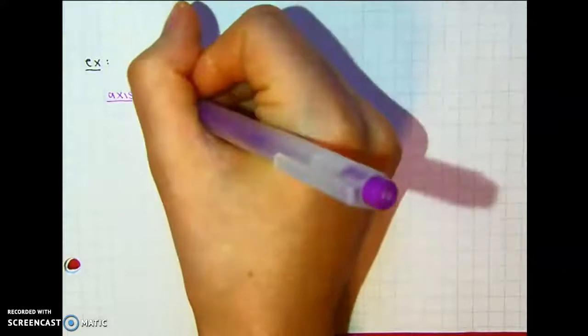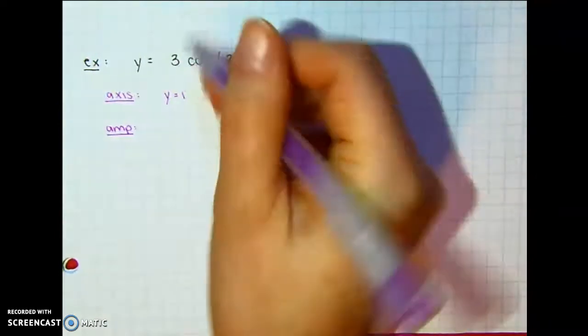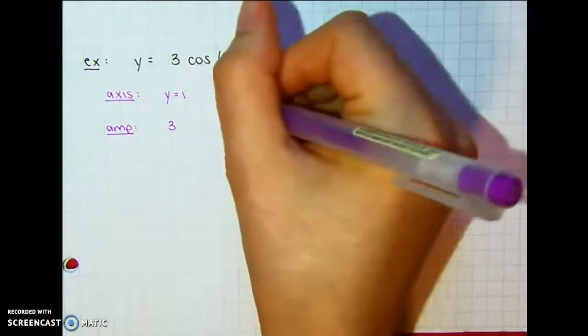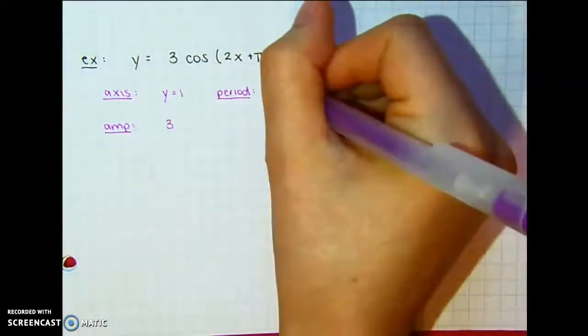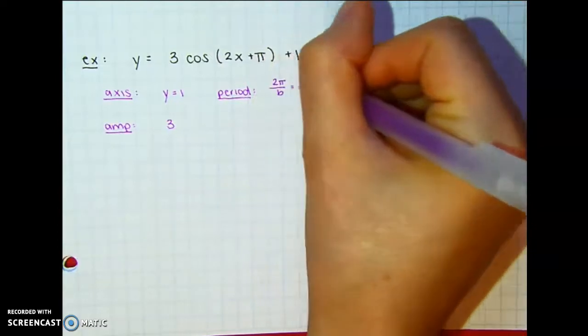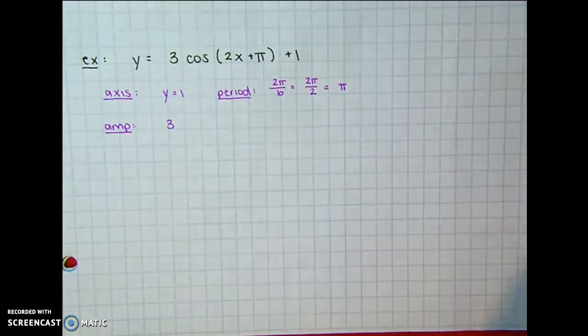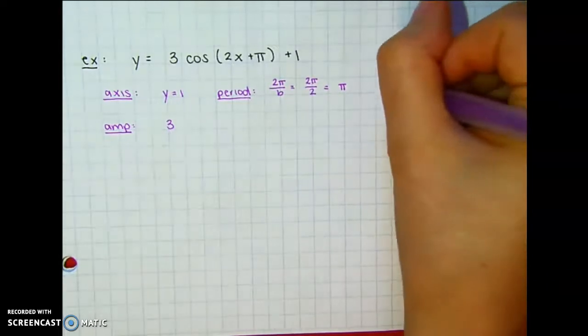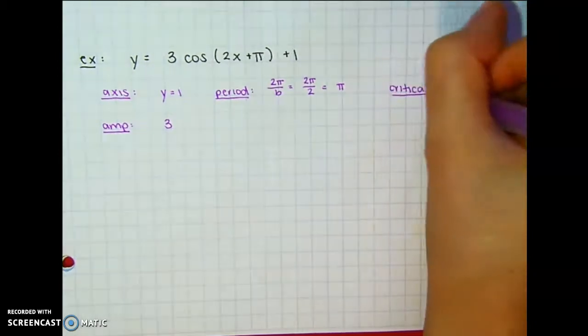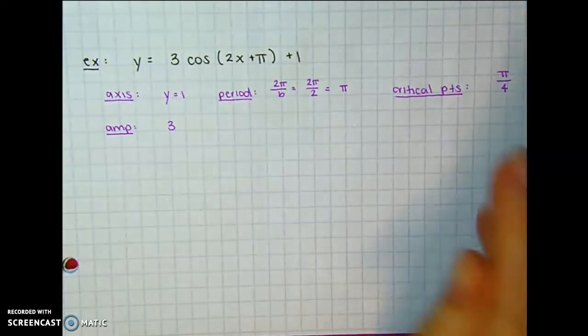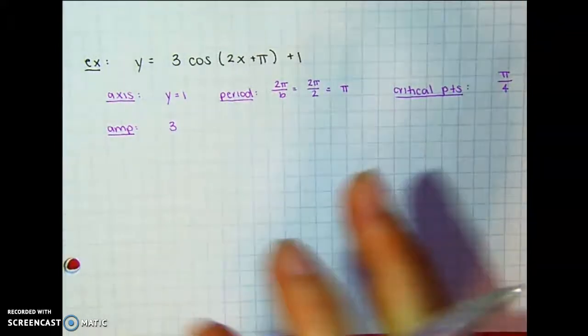So our axis is going to be y equals 1. Our amplitude is going to be 3. The period is going to be 2π over B, which in this case is 2π divided by 2, so it's going to be π. And that helps you find the critical point distance. So we take that and we divide it by 4 because we have a starting point and then we need to know how far until we go to the max, how far until we go back to the axis, how far do we go to the min, and back.